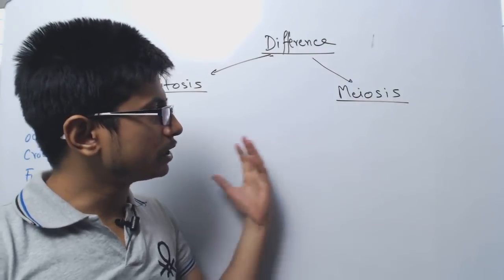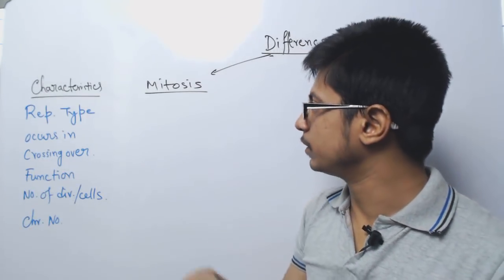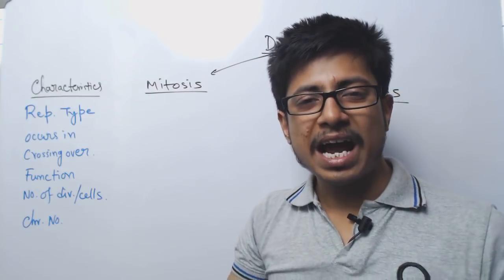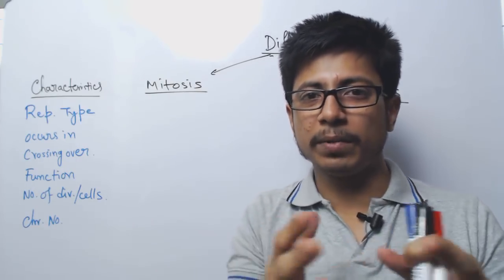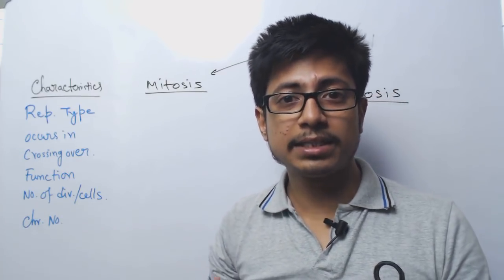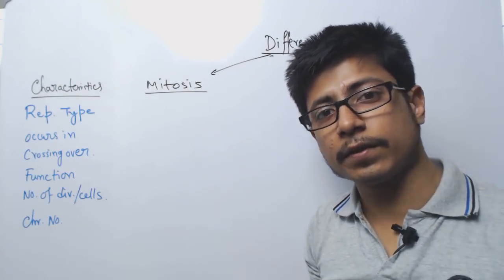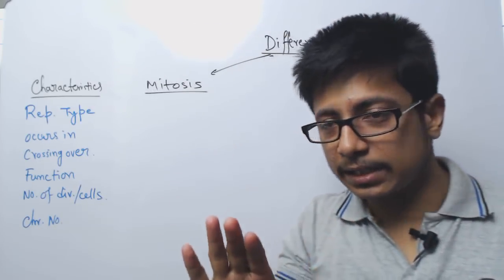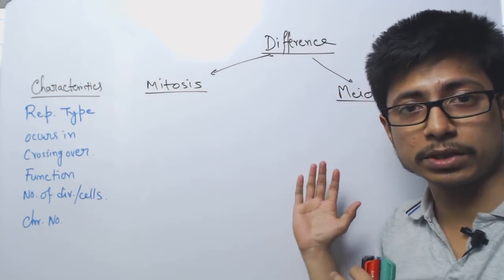Before talking about both types of cell division, we must know the basic thing — what is the major difference between both these types. Both mitosis and meiosis are processes by which a cell is divided to produce some offspring cells. There will be a mother cell that gives rise to some daughter cells. But the process of cell division in mitosis is different while in meiosis it is completely different. There are different properties and characteristics we want to compare between mitosis and meiosis cell division.